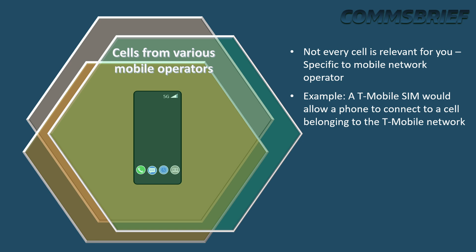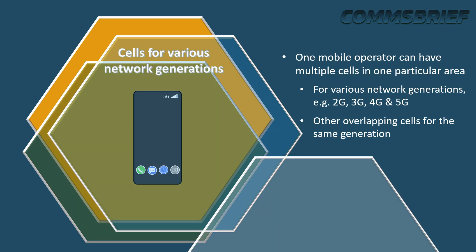Your mobile phone is likely to be in many different cells at any given time, but not all cells are relevant for you because cells are specific to a mobile operator. For example, if you have a SIM card from T-Mobile, your phone can only access cells from T-Mobile. So if you are within the coverage area of another mobile operator like Verizon or AT&T, you won't be able to access their cells without their respective SIM cards. Also remember that the same mobile operator will have different cells for different generations of mobile networks — 2G, 3G, 4G, and 5G — so that if you run into poor network coverage or if the 4G or 5G network is busy, there is still some connectivity available.